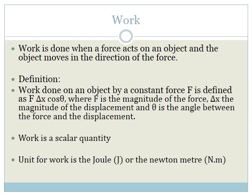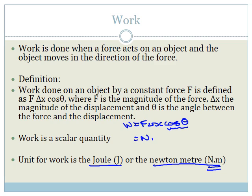The unit for work is the joule, or the newton meter. We get newton meter from the formula: work equals F·ΔX·cosθ. cosθ has no unit, but F is measured in newtons and ΔX is measured in meters, so work done is newton meters — better known as joules.